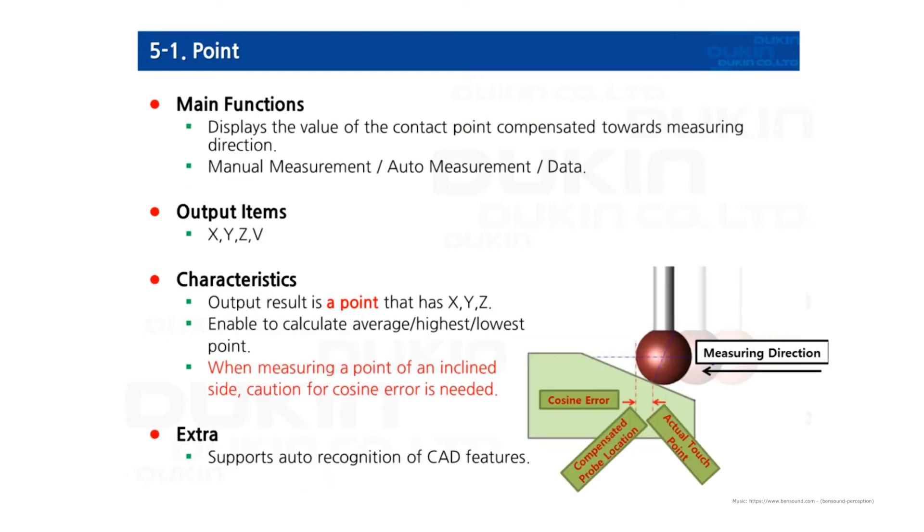First, point. The minimum measuring point required of measuring a point is only one point. It outputs X, Y, and Z coordinates. Let me tell you about the most important thing when you measure a point. First, the sensor detects the coordinate of the center of the ruby ball.